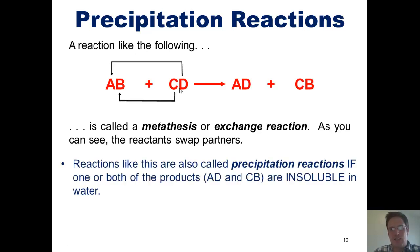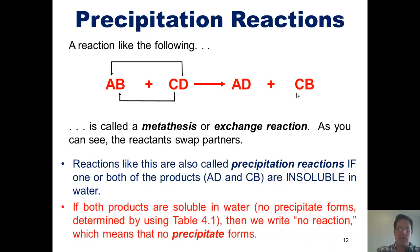Reactions like this are also called precipitation reactions if one or both of the products, AD and CB in this case, are insoluble in water. Now, if both products are soluble in water, that is, no precipitate forms, which we would determine using the table from the previous slide, then we write no reaction, which means no precipitate forms.